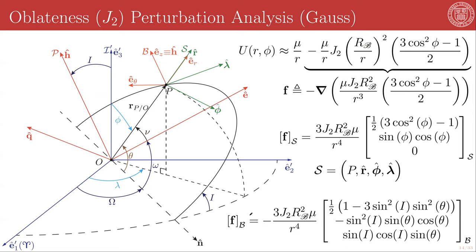You will note that the perturbing force in this case has non-zero components in each of the three unit directions of the B frame, and recalling the form of Gauss's perturbation equations, this tells us that we will have non-zero derivatives for all of the orbital elements.